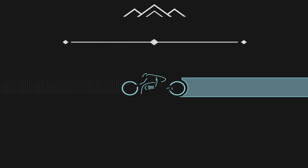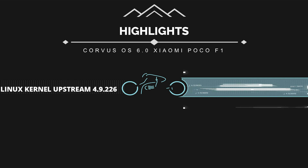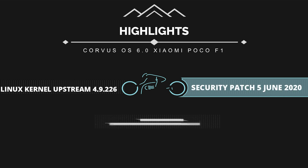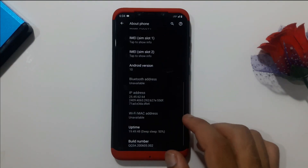First, here are the changelog highlights. The kernel has been updated to Linux 4.9.226. Next, we have the latest security patch up to 5 June 2020. And next, Magisk is now optional, which means Magisk is excluded from the ROM zip.